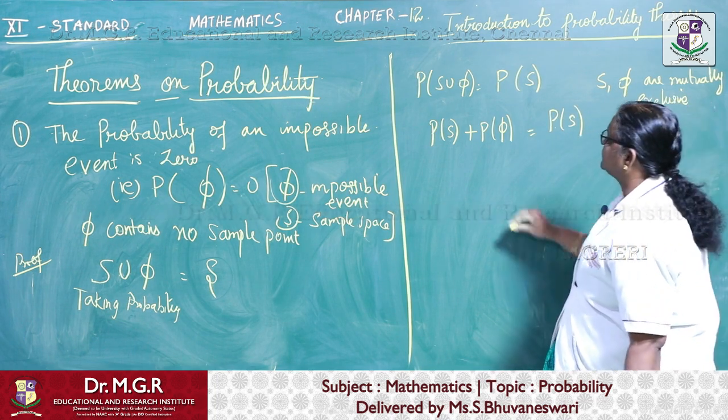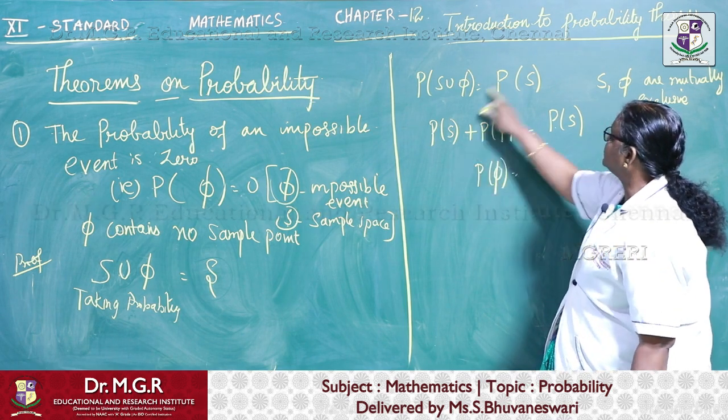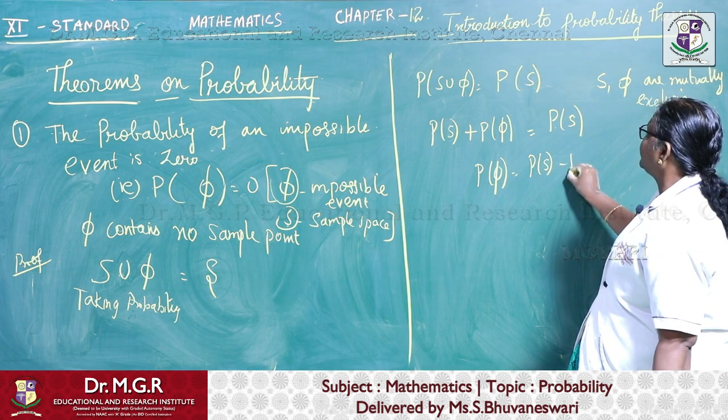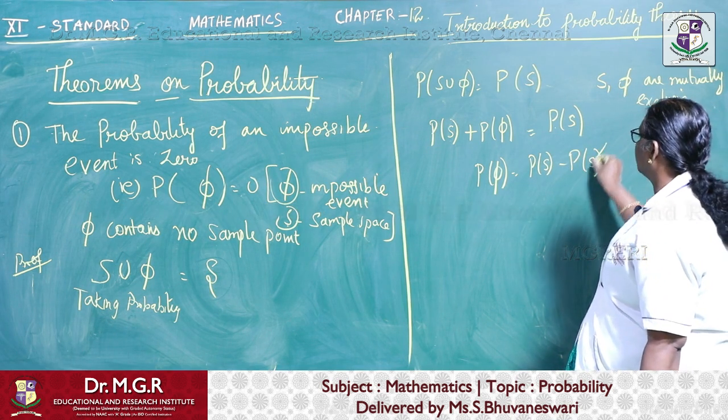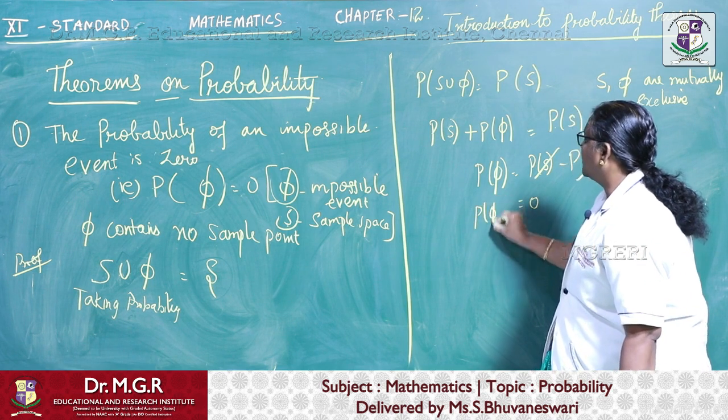Now, what is the next criteria? P of phi only we want. So P of S can be taken to the other side. So P of S minus P of S. So these two will get cancelled giving you P of phi equal to 0.